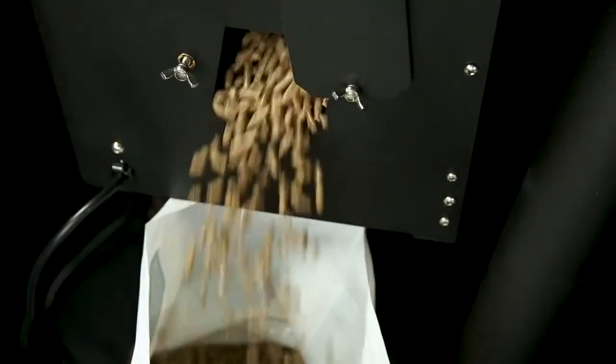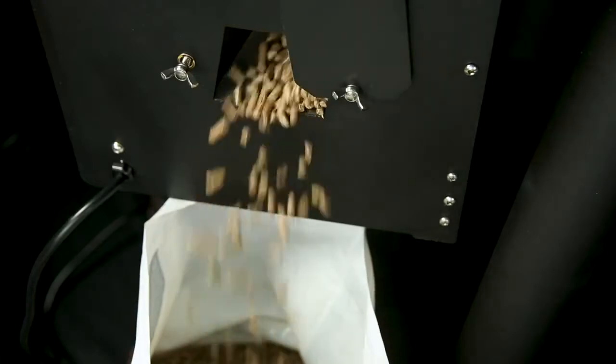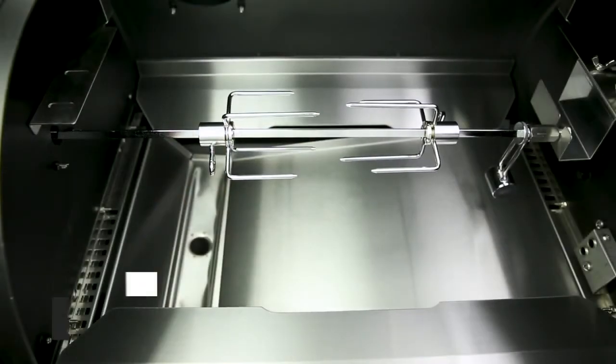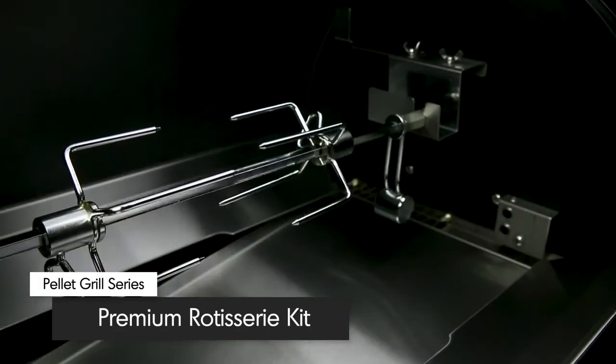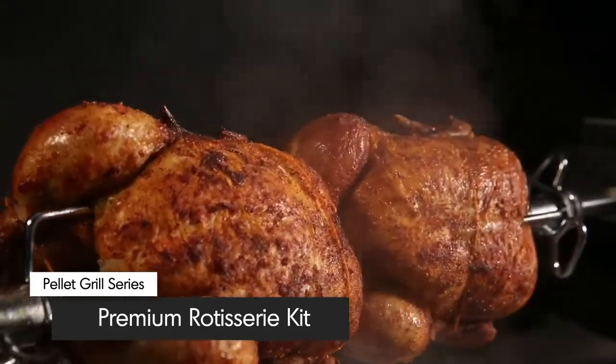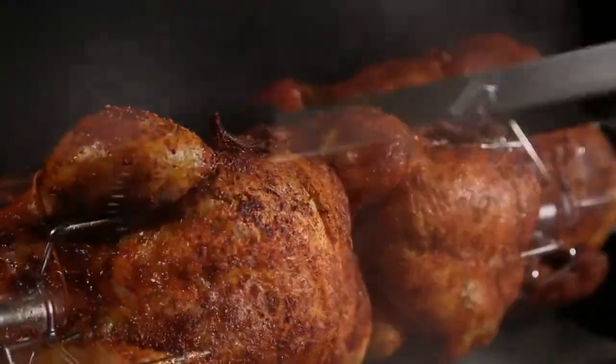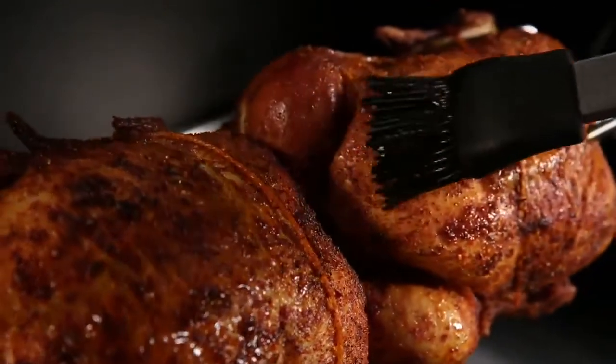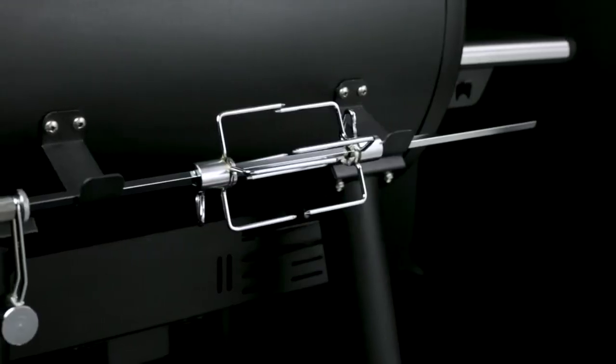Unlike most pellet grills, the Broil King Pellet comes with a full premium rotisserie kit right out of the box. Cook succulent rotisserie chickens, or any number of BBQ classics, while roll basting them in their own juices. Store the rotisserie rod in the back of the grill when not in use.